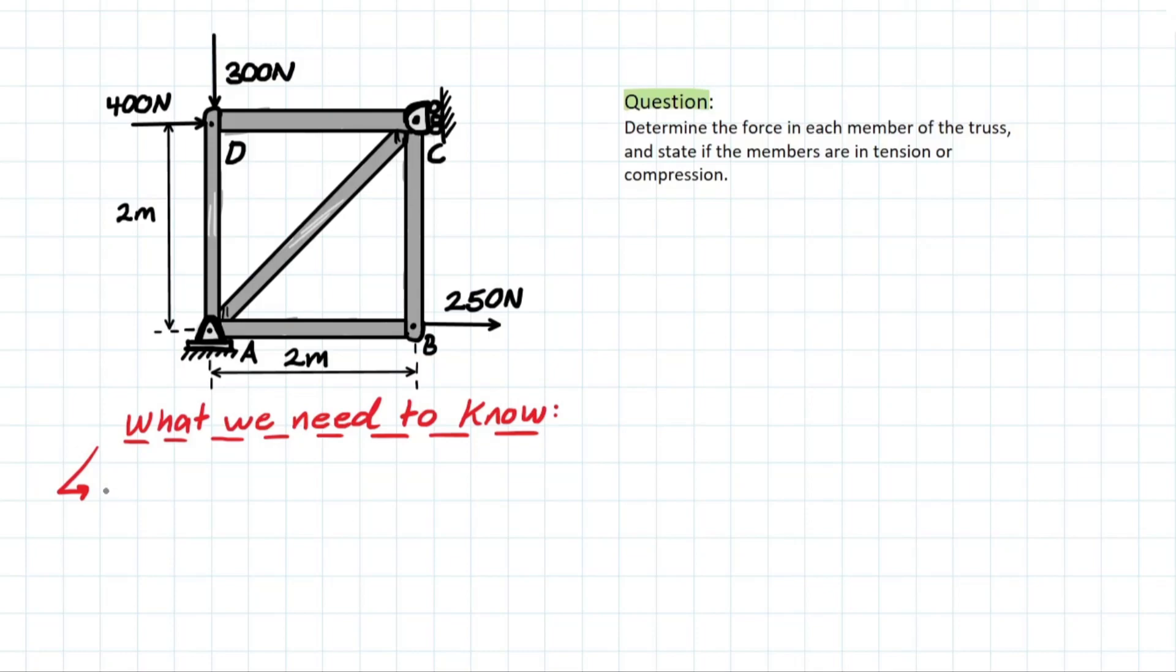So when we're solving these problems, what do we need to know? We need to know that all loads are applied at joints. What does that mean? We have a load here at this joint, two loads here at this joint, and our reactions will be at these supports.